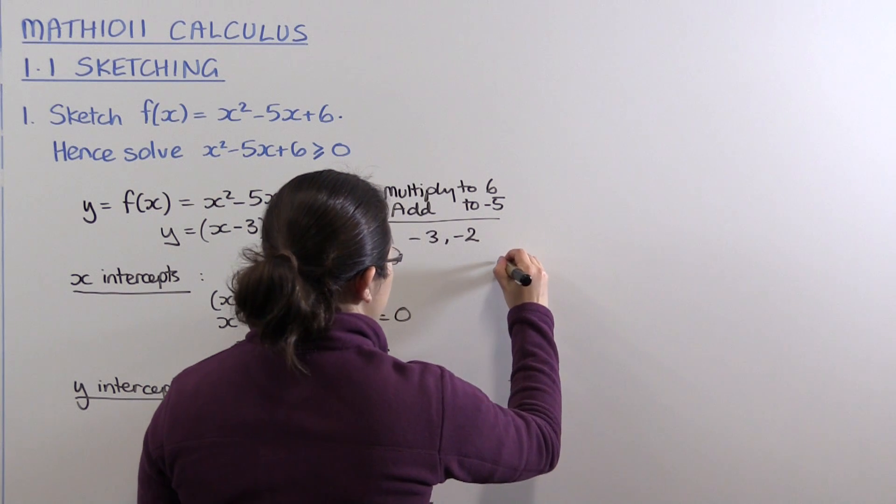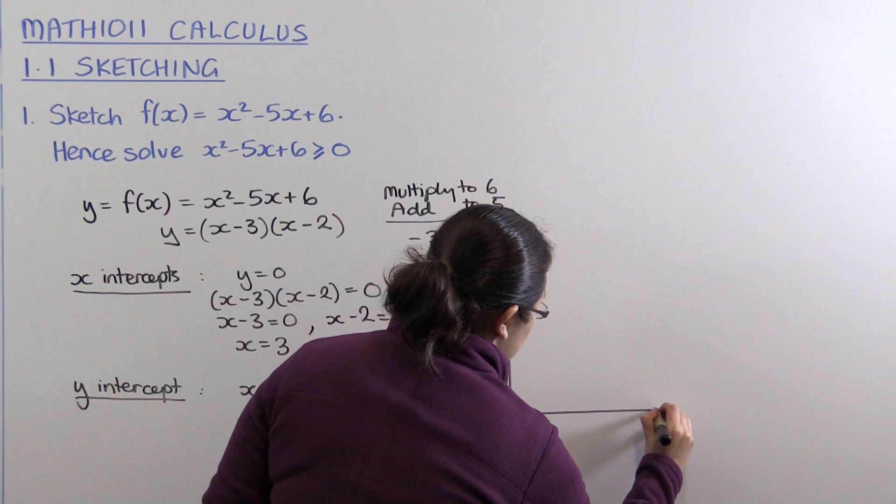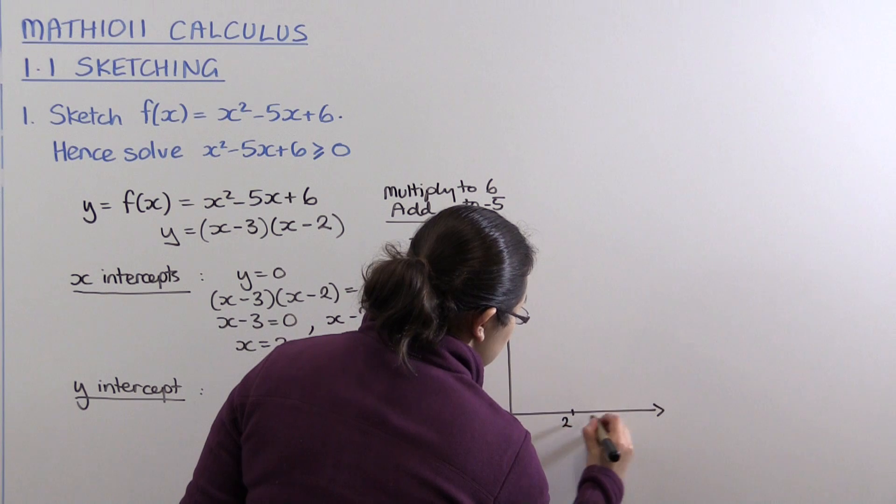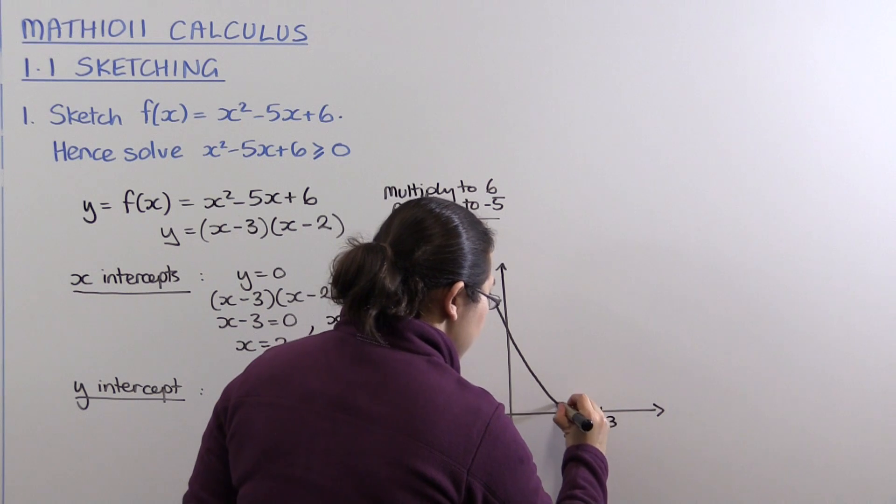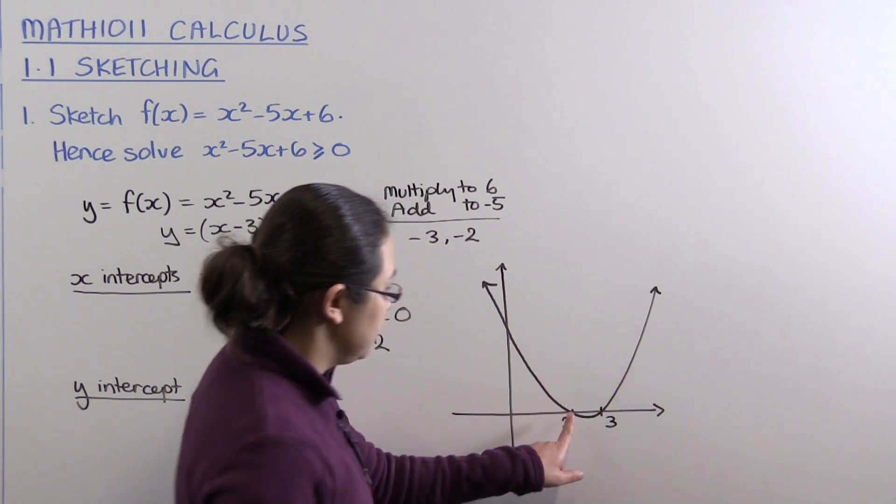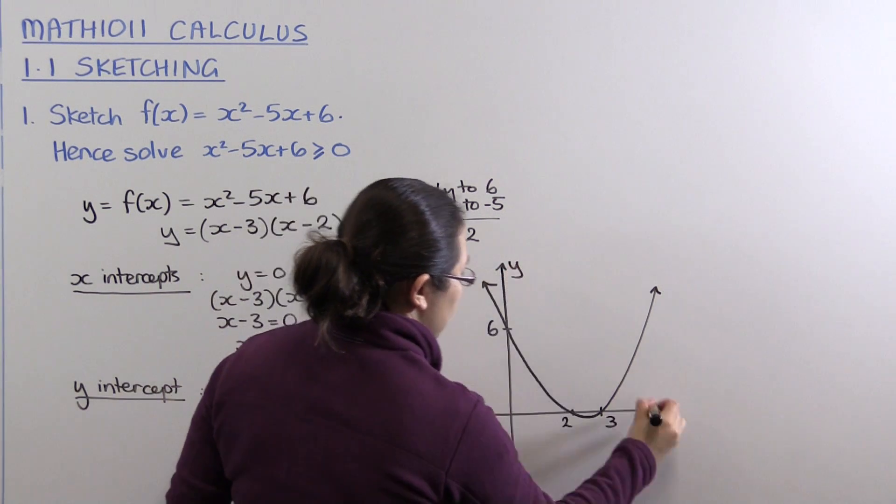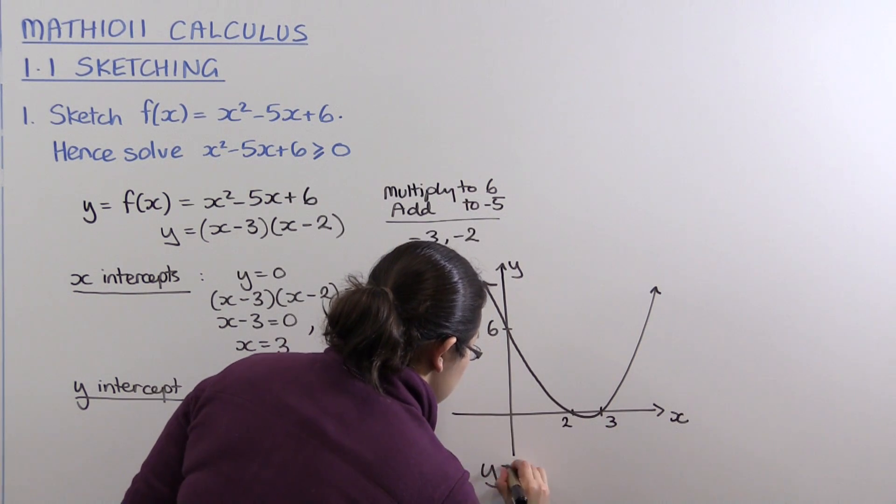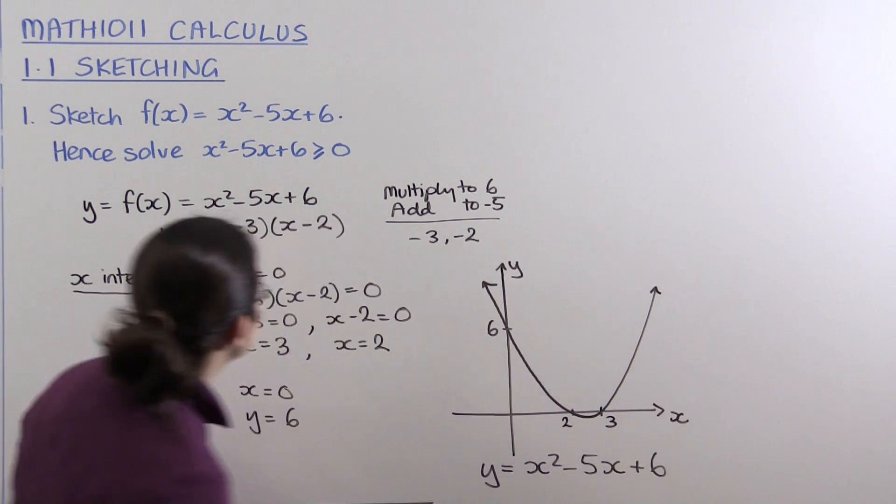So we've got x-intercepts of 2 and 3. We can draw our parabola passing through the x-intercepts of 2 and 3, with a y-intercept of 6. This is our parabola: y = x² - 5x + 6.